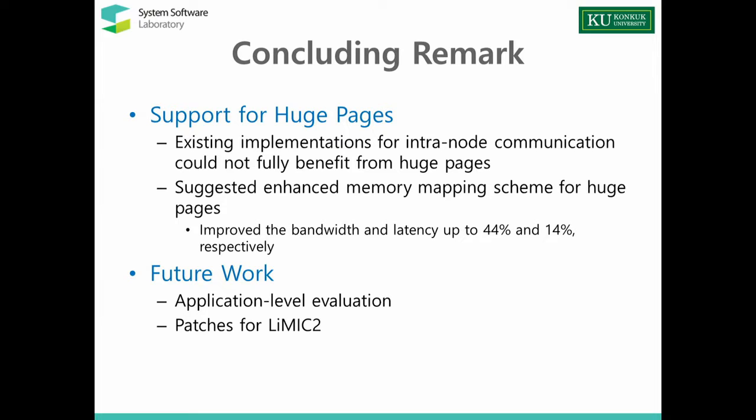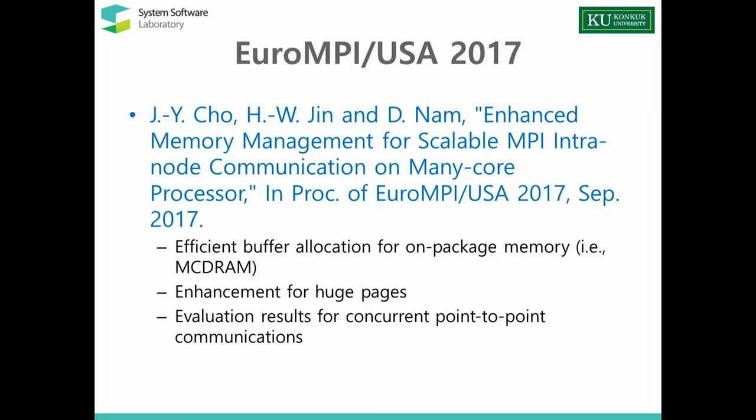In conclusion, we revealed that existing implementations for intranode communication could not fully benefit from huge pages, and we suggested an enhanced memory mapping scheme for huge pages. We showed that our enhanced LIMIC could improve bandwidth and latency by 44% and 40% respectively. For future work, we plan to measure application-level evaluation, and we are providing patches for LIMIC. We also have a paper at EuroMPI this year covering efficient buffer allocation for high-bandwidth memory (MCDRAM), enhancements for huge pages, and evaluation results for concurrent point-to-point communications.